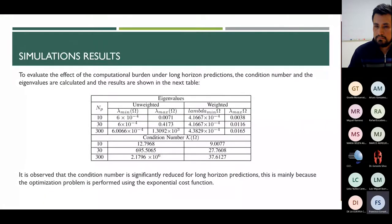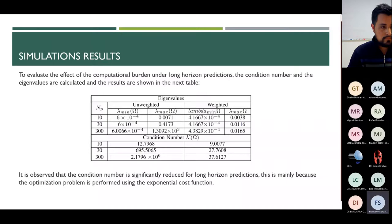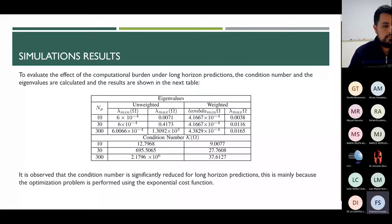To evaluate the effect on computational burden for long horizon prediction, the condition number and the eigenvalues of the matrix used in the optimization are calculated. We can observe that the condition number for the unweighted system is larger than the weighted system. Therefore, the proposed approach is numerically well-conditioned, avoiding numerical instability of algorithms and maintaining the stability of the closed-loop system.